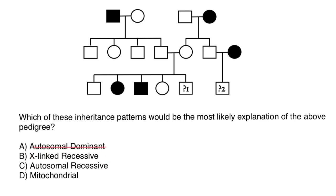Next, let's check X-linked recessive. Why is it not X-linked recessive? Assume that this person has a defective X chromosome in order to be affected, and a normal Y chromosome, while this female has two normal X chromosomes. The son should inherit a normal Y chromosome from the father, and from the mother he can inherit any of the X chromosomes — both are going to be normal, which explains his normal phenotype.